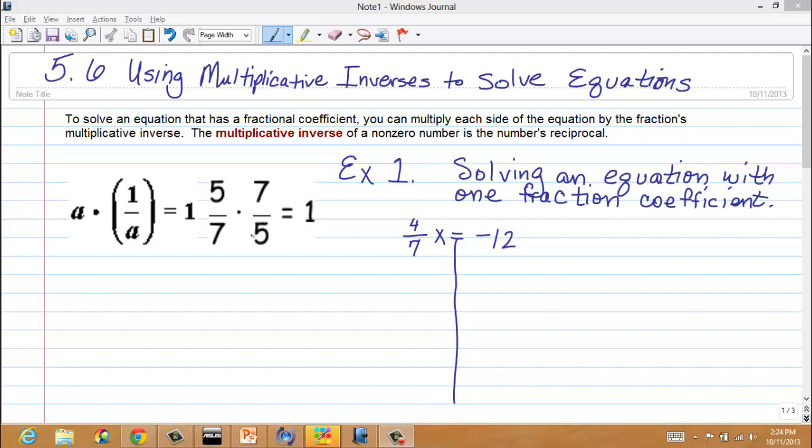Again, the only time I'm going to recommend that you use this particular process is when you are only dealing with one fraction, and it happens to be the coefficient on a variable. That's the only time. So, here we have this example here. 4 sevenths x equals negative 12. Alright? In order to get x by itself, well, we've got to isolate the variable.